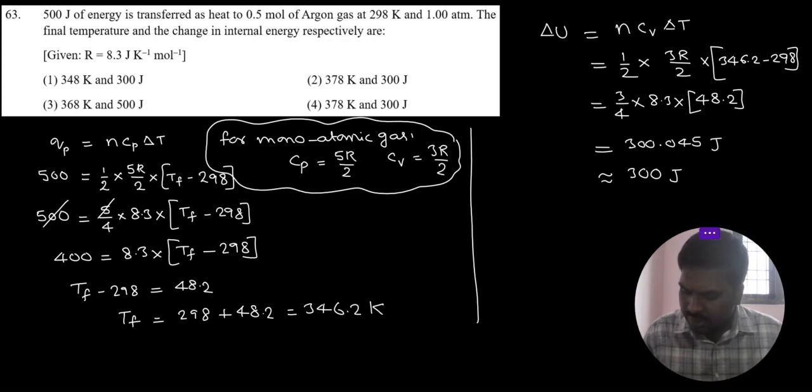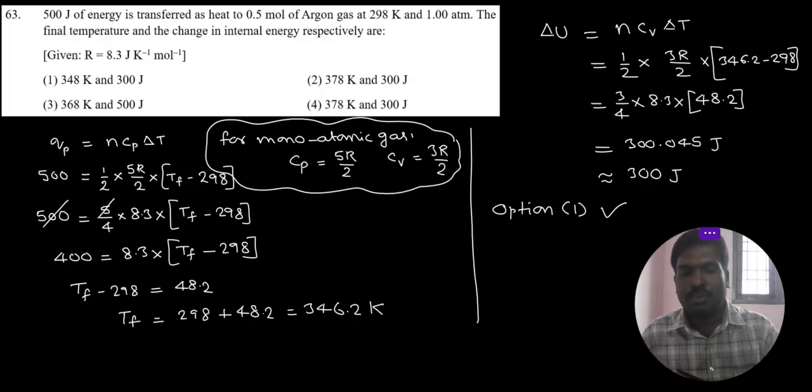Final temperature 346 Kelvin means roughly 348 Kelvin. So which option is the right answer? Option 1 is the right answer. So I hope everyone understood the solution. Thank you.